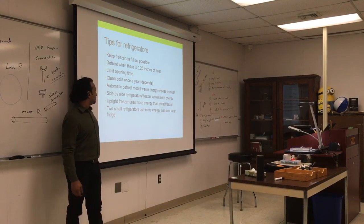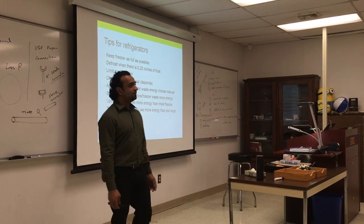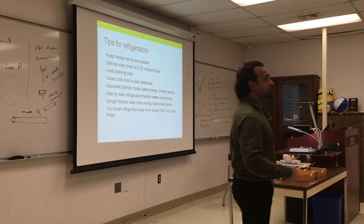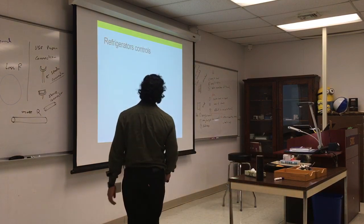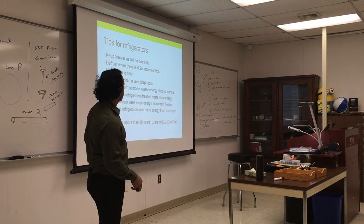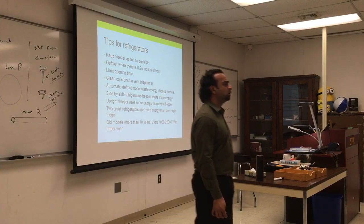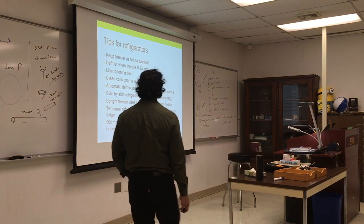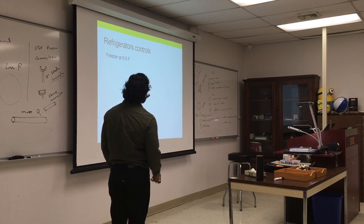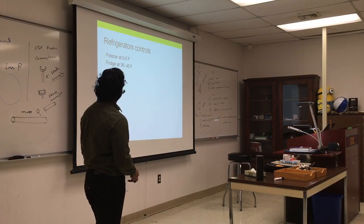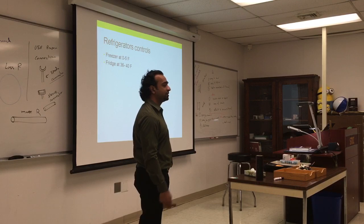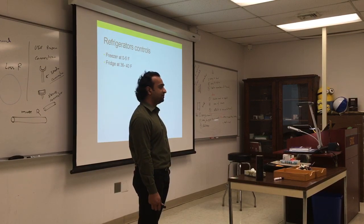Sometimes it's good to have two small refrigerators instead of one big one — one for daily use and one for deep storage. Some people have a second one in the garage so they open and close it less. Old models from 10 years ago use around 1,000 to 2,000 kilowatt-hours per year — that's a lot. For temperatures: freezer should be between 0 and 5°F, and the fridge between 32 and 36°F — you want to stay below 36°F, otherwise fresh vegetables and other foods will freeze and lose texture.